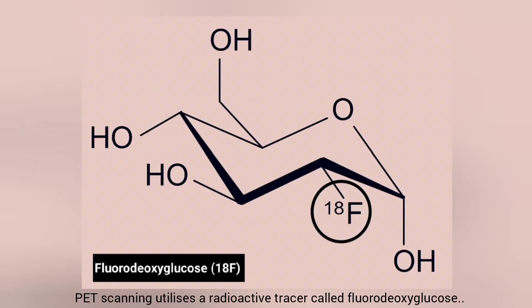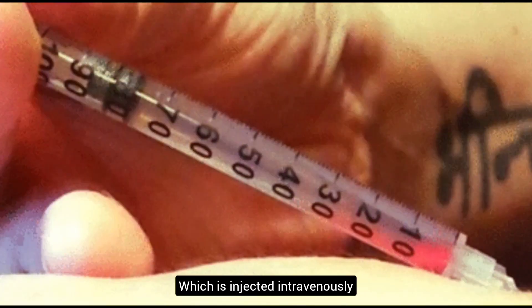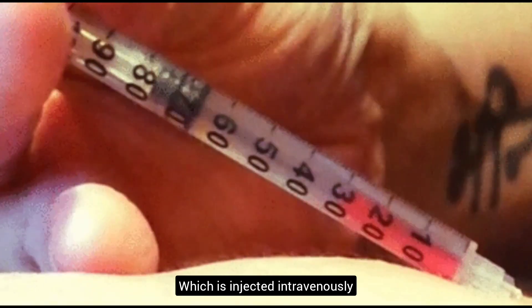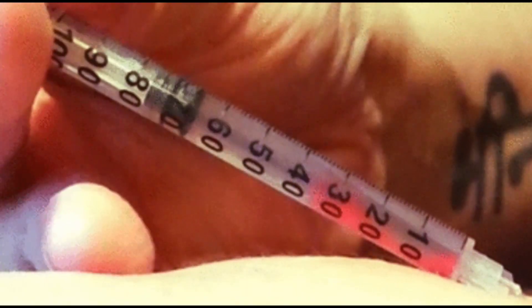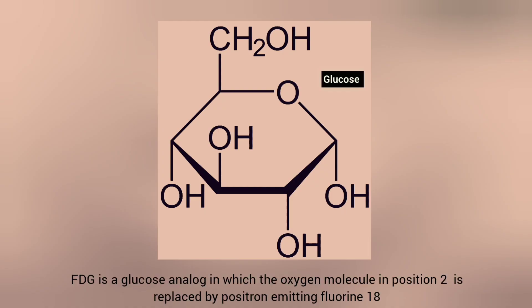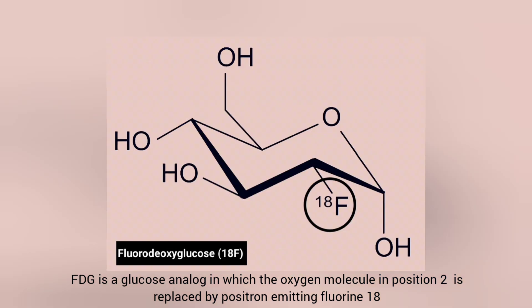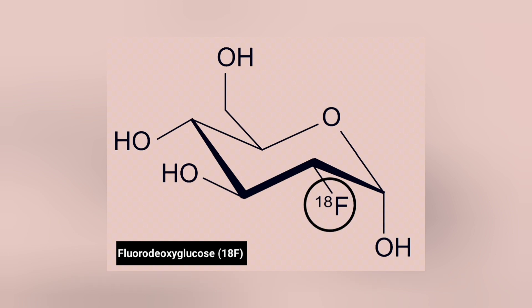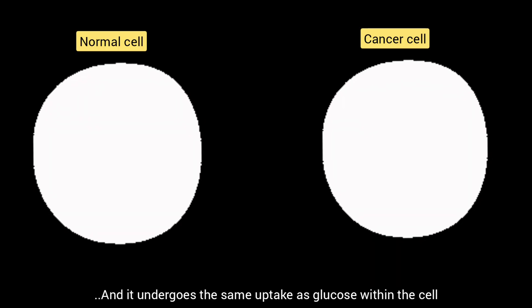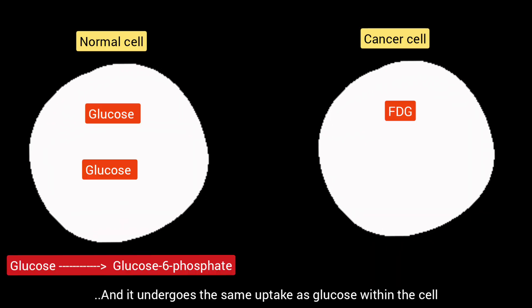PET scanning utilizes a radioactive tracer called fluorodeoxyglucose (FDG), which is injected into the body intravenously. FDG is a glucose analogue in which the oxygen molecule at position 2 is replaced by positron-emitting fluorine-18, and it undergoes the same uptake as glucose within cells.